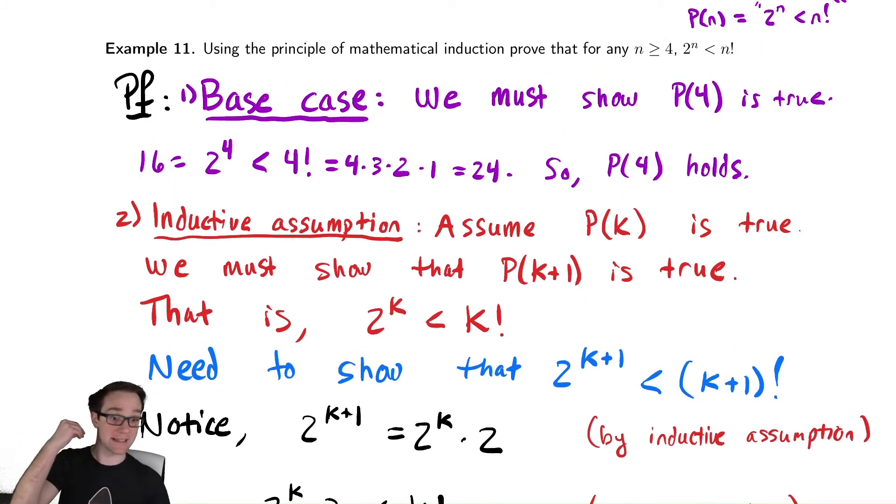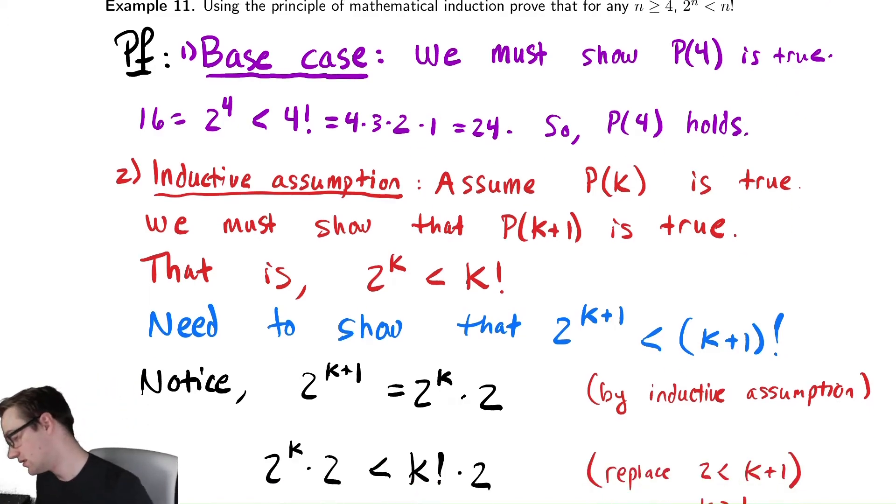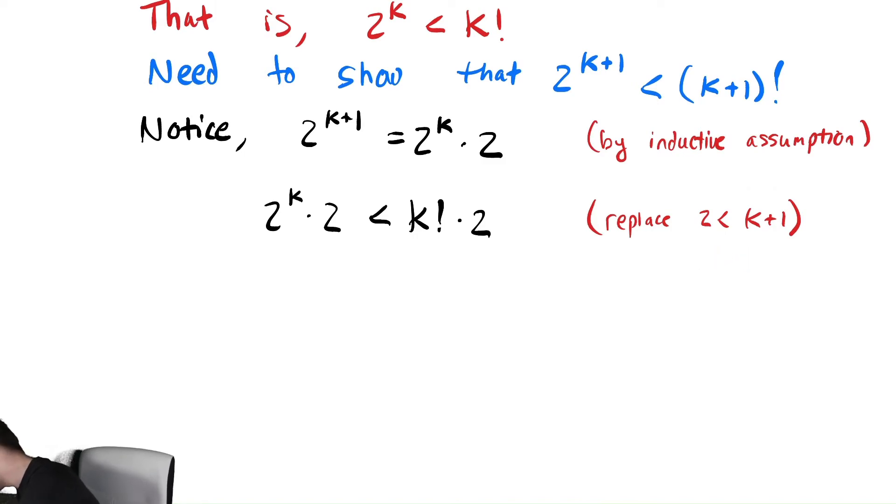According to the statement of the problem, every value I'm plugging in is at least 4, therefore this is definitely the case. So let's write that down. Since k is greater than or equal to 4, k+1 is definitely greater than 2. Because of that reasoning, therefore I can replace that 2 with k+1. So this is less than k factorial times k+1.